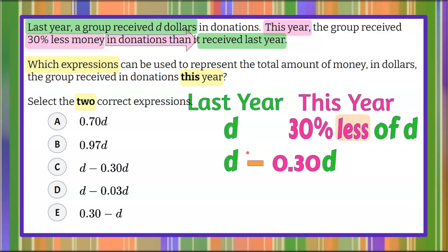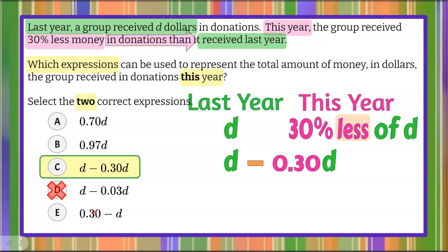Looking at the answer choices, I can see that is C: D subtract 0.30D. Considering the other expressions with subtraction: answer D is incorrect — they converted 30% to 3% instead of 30, so I'll eliminate that. And answer E subtracted D from just 30%, with no 30% of D, and subtracted the wrong way. Since subtraction is not commutative, I can eliminate E as well.